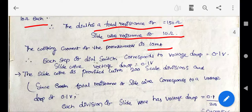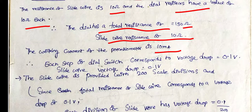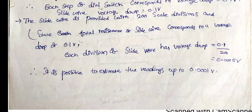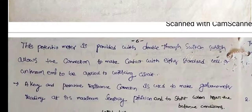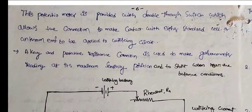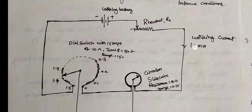Each step of the dial switch corresponds to a voltage drop of 0.1 volts. The circular slide wire has 200 divisions, so each division has a voltage drop of 0.1 ÷ 200 = 0.0005 volts, which equals 0.5 millivolts. It is possible to estimate readings up to 0.0001 volts. The potentiometer is provided with a double-throw switch to connect either the standard cell or the unknown voltage.